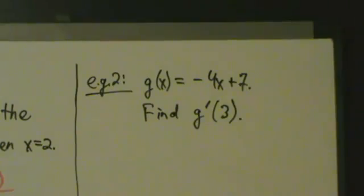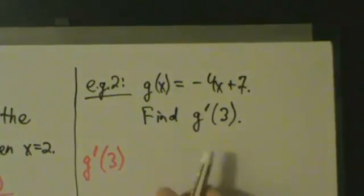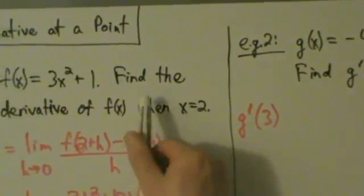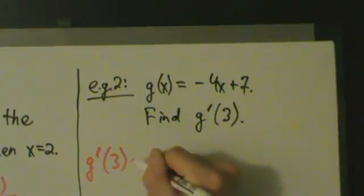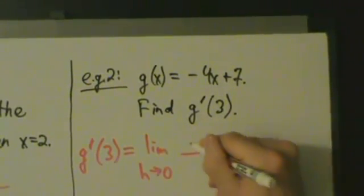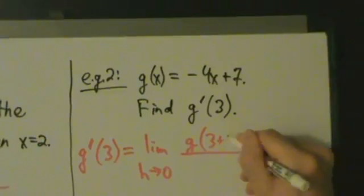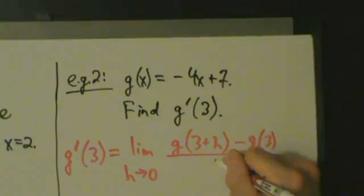Let's do Example 2. g of x equals negative 4x plus 7, and we want to find g prime of 3. This is slightly different wording from Example 1, but it's two different ways of asking the exact same question. So g prime of 3 is the limit as h goes to 0 of g of 3 plus h minus g of 3, all divided by h.